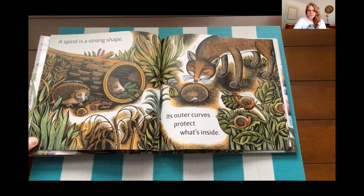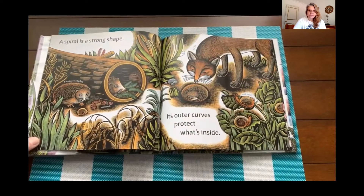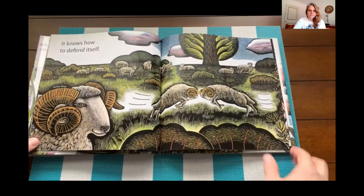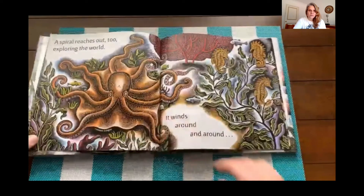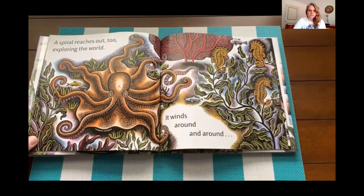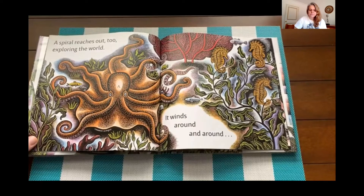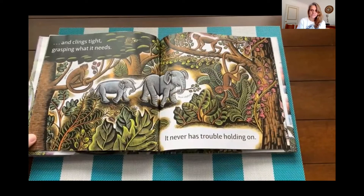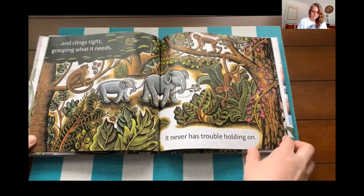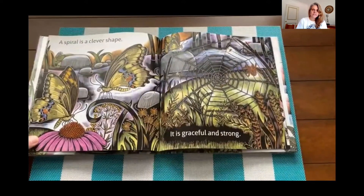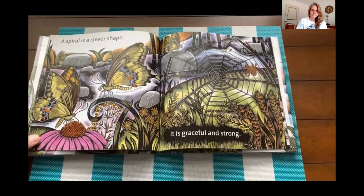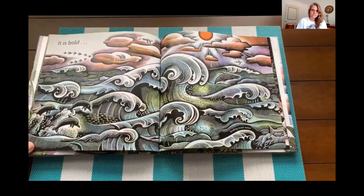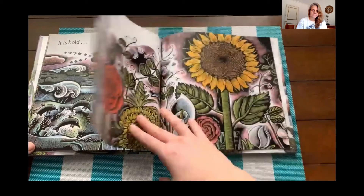A spiral is a strong shape — its outer curves protect what's inside, and it knows how to defend itself. A spiral reaches out, exploring the world. It winds around and around and clings tight, grasping what it needs. It never has trouble holding on. A spiral is a clever shape — it is graceful and strong, bold and beautiful.